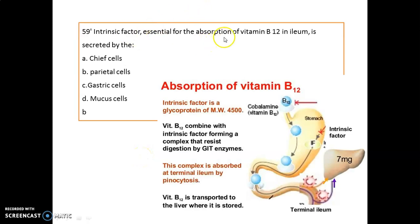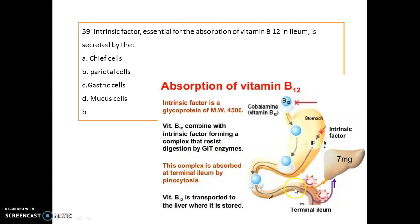The intrinsic factor, which is essential for absorption of Vitamin B12 in the ileum, is secreted by parietal cells. The intrinsic factor is a glycoprotein with a molecular weight of around 4500. Vitamin B12 combines with the intrinsic factor to form a complex that resists digestion by GI enzymes. This complex is absorbed at the terminal ileum by pinocytosis, and Vitamin B12 is then transported to the liver where it is stored.